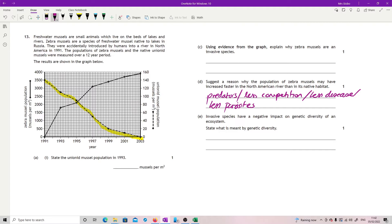Invasive species have a negative impact on genetic diversity of an ecosystem. State what it's meant by genetic diversity. This is a straight definition. Okay, what we're looking for is the number and frequency of alleles in a population. And that's it.